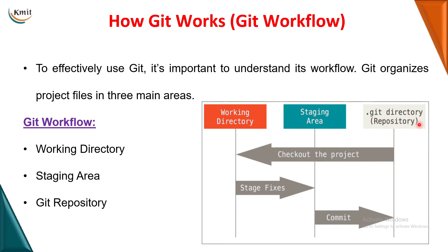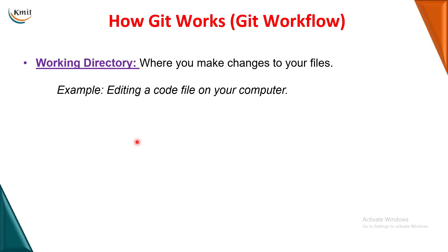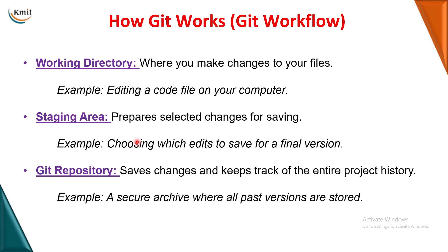Here is a simple analogy: suppose you decide to go for a trip. From your wardrobe you remove all the nice clothes you want to wear — that is the working directory. From those clothes you select a few and pack them into a suitcase — that is the staging area. Finally, when you go by flight and check in that suitcase — that is the git repository. So these are the three areas in which Git works: working directory, staging area, and git repository.